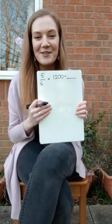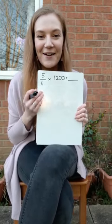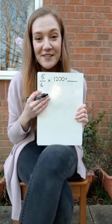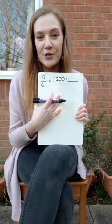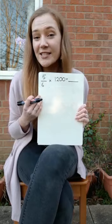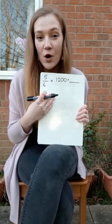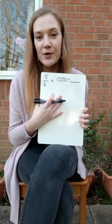Now I know you're grinning behind your screens, but let's try our best to get through this together. So I'm going to try and explain to you how to find five sixths times 1,200, which is simply five sixths of 1,200.